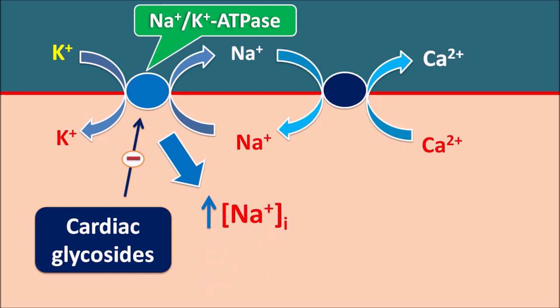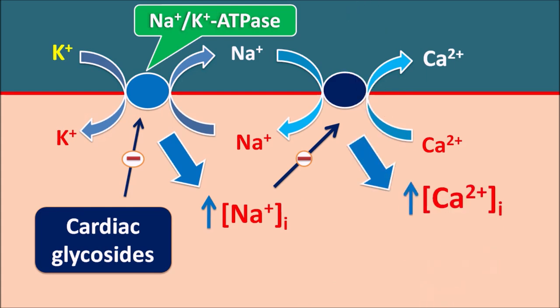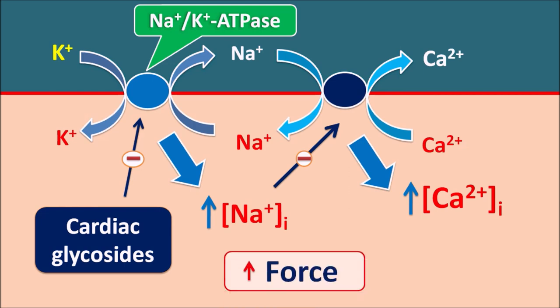Cardiac glycosides block the sodium-potassium ATPase pump. When this pump is inhibited, sodium does not go outside, resulting in increased intracellular sodium levels. Increased intracellular sodium then inhibits the sodium-calcium exchange pump, resulting in increased intracellular calcium levels. In this way, cardiac glycosides increase intracellular calcium within the cardiac membrane, which increases the force of contraction. That is why cardiac glycosides act as cardiotonics.